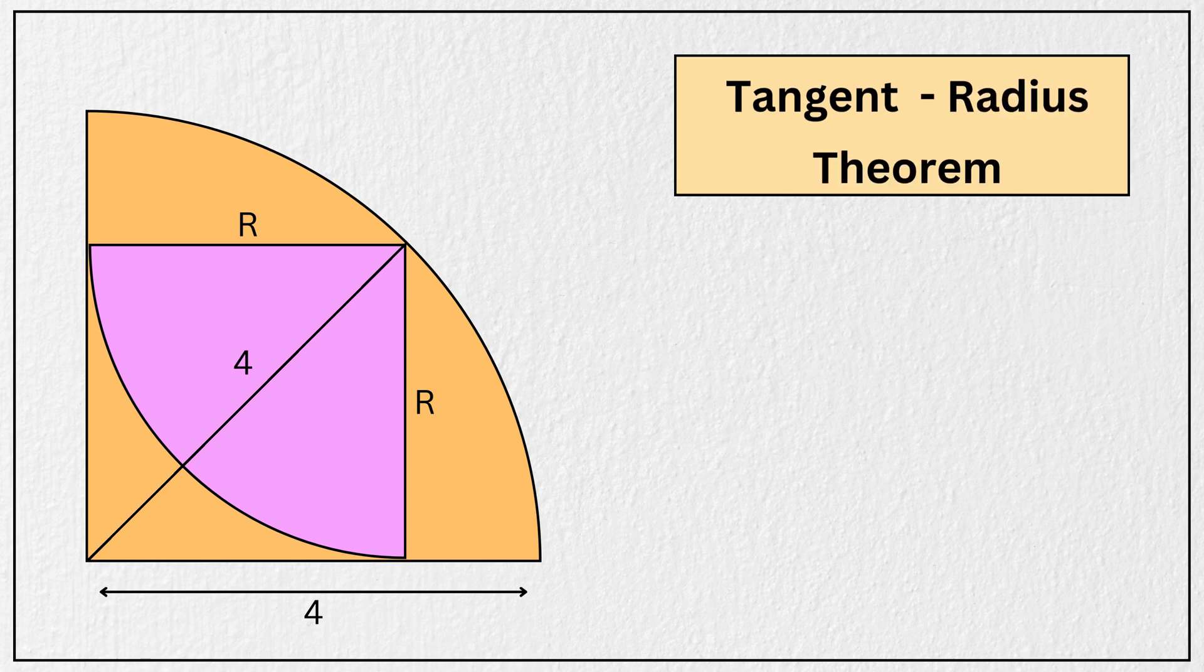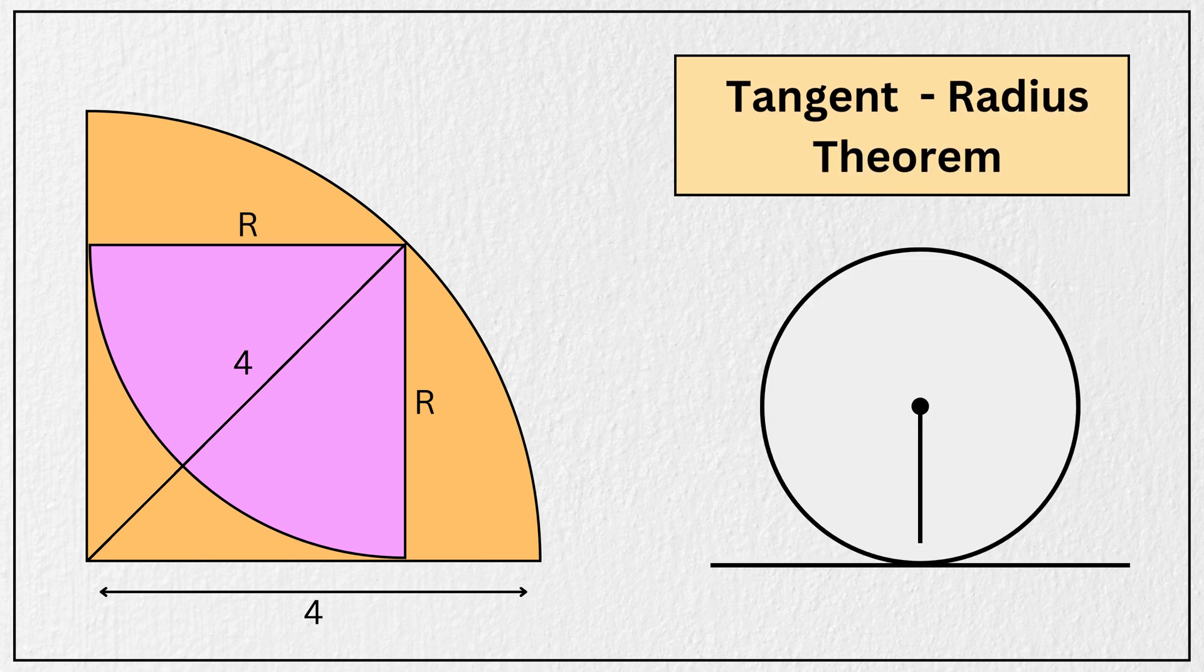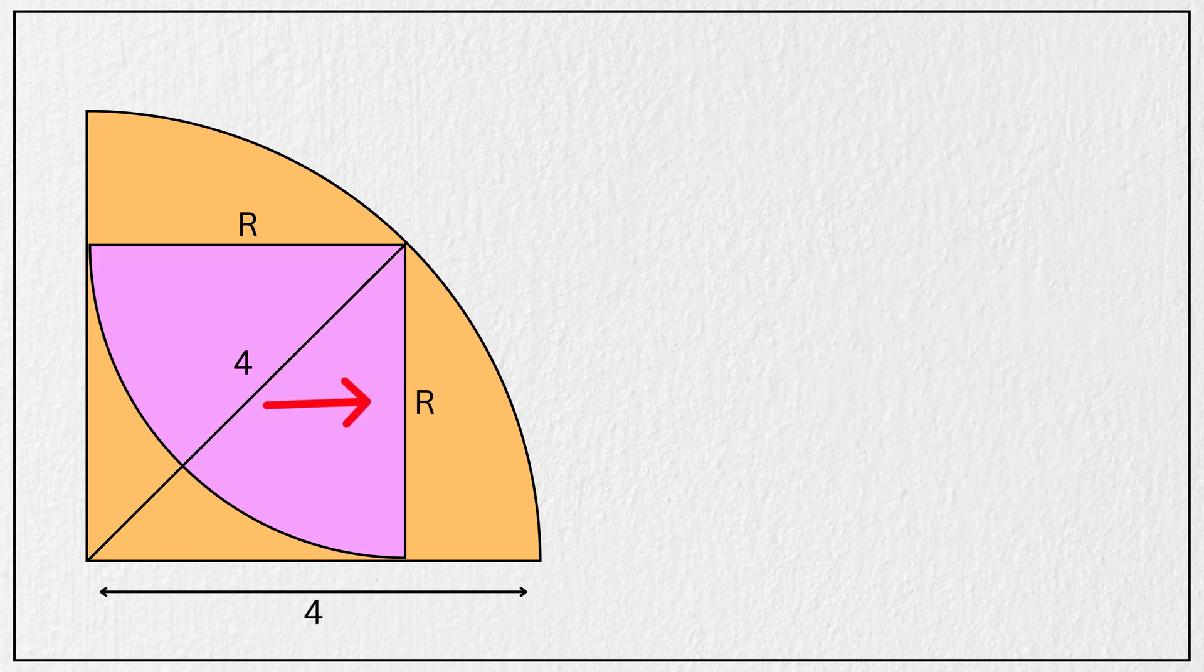and by the radius tangent theorem, that is, whenever a radius is drawn to a point of tangency, it is always perpendicular to the tangent. That means the radius of this pink quarter circle is perpendicular to the radius of this orange circle, which means this angle here is a right angle.